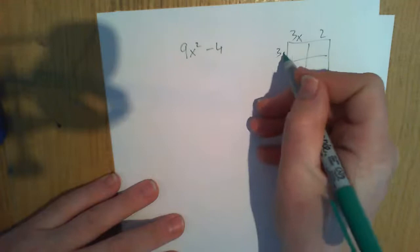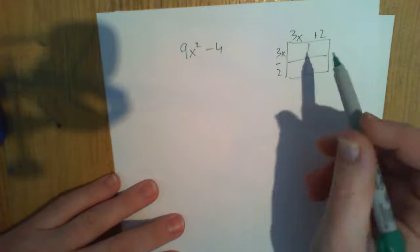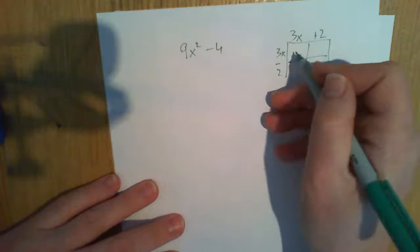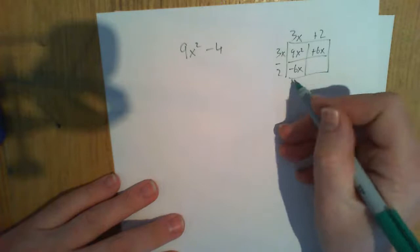Multiply them all out again, just to be sure. Let's see. Do we get the same thing back? 9x squared plus 6x minus 6x minus 4. As you can see, they're going to cancel. And you're left with 9x squared minus 4.